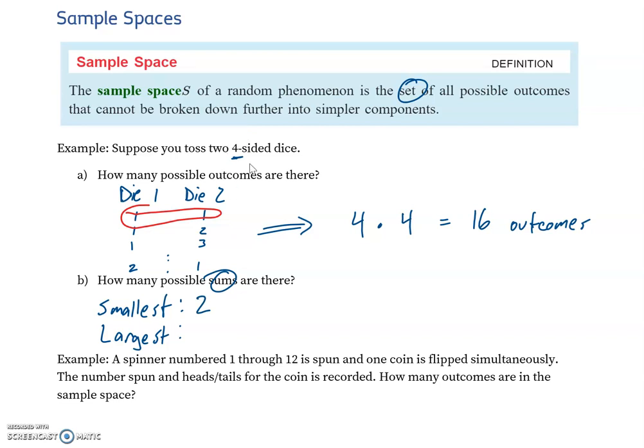Now, because these are four-sided dice—and it's really important to keep track of how many sides your dice have—because these are four-sided, we say, okay, well, the largest possible outcome I could have is I rolled both of them as fours. So four plus four, the largest sum I could have is eight.